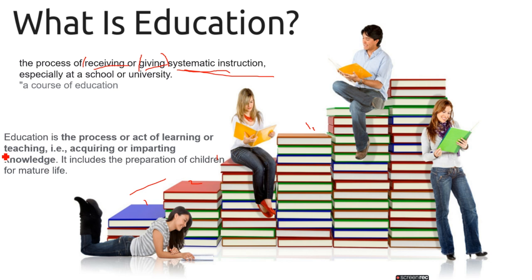The second point: education is the process or act of learning or teaching — acquiring or imparting knowledge — and it includes the preparation of children for mature life. Who is responsible for making children mature? Acquiring means receiving knowledge; imparting means it shows in your behavior. That is the impact of education.